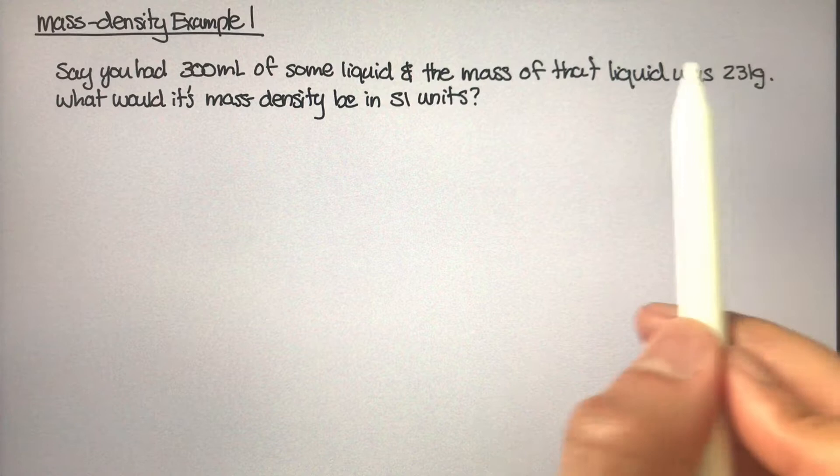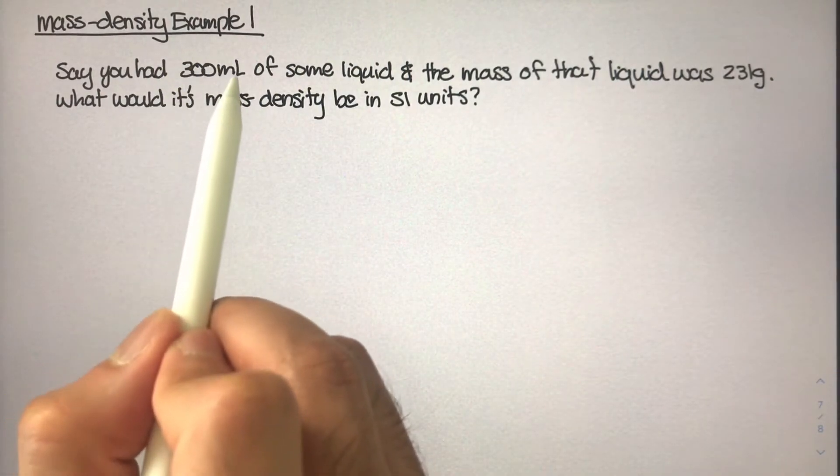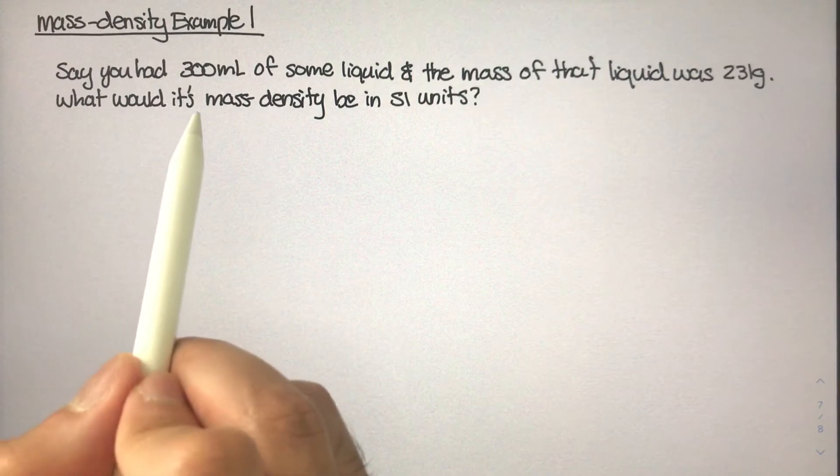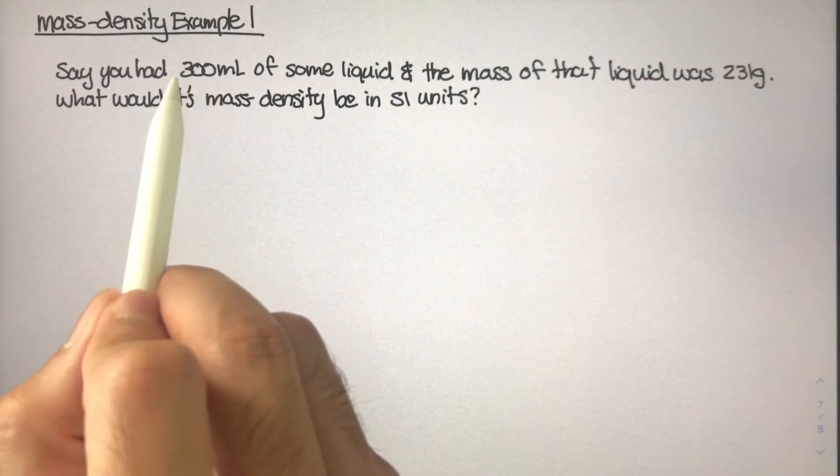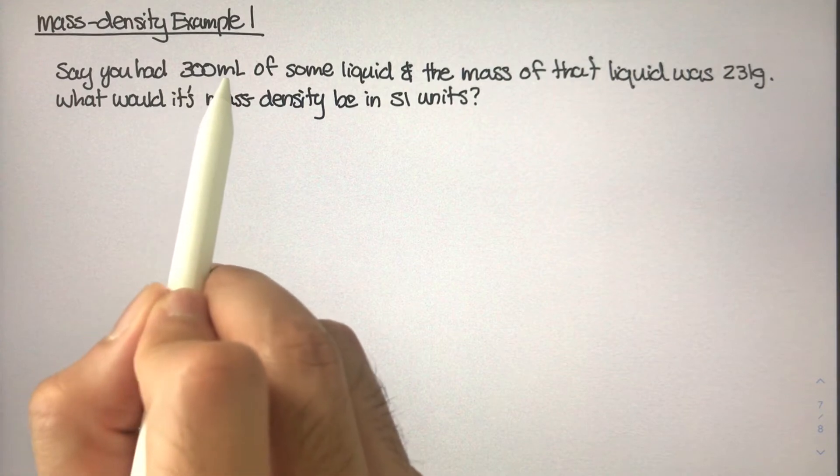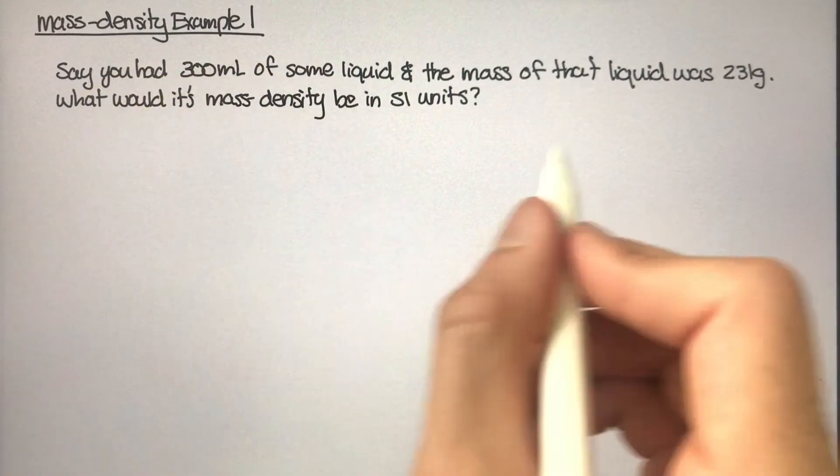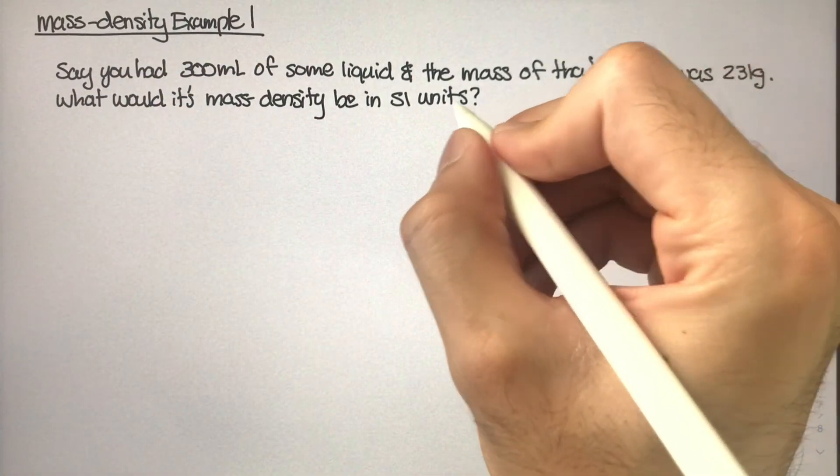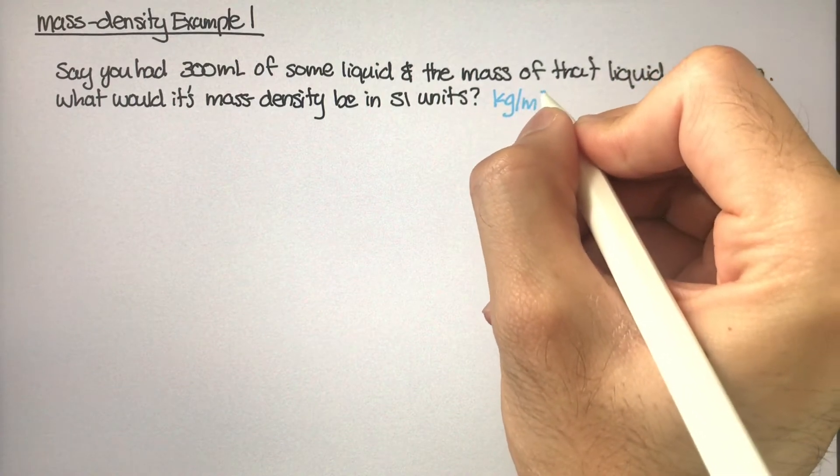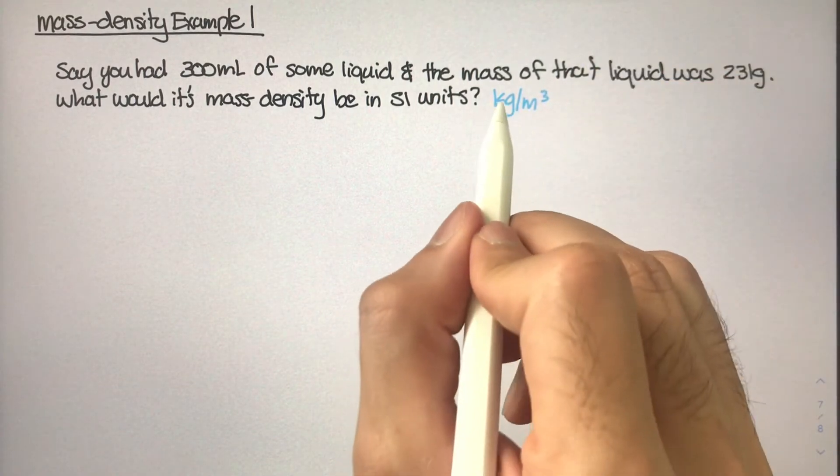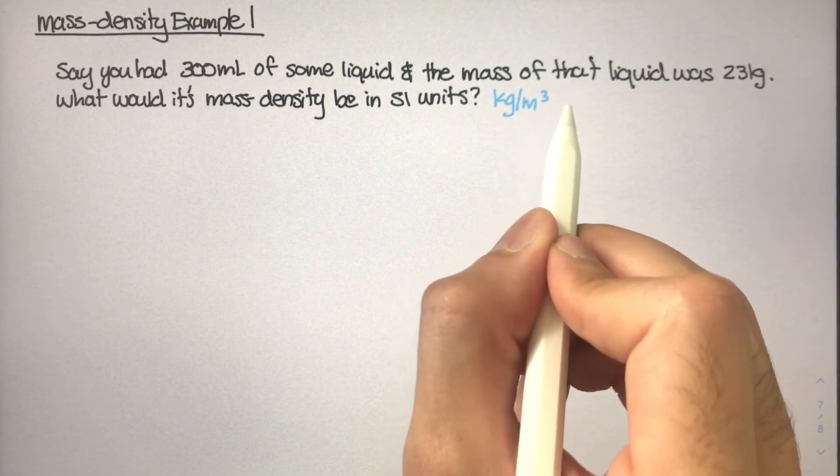So we have 231 grams of some liquid poured into a 300 milliliter container. What would its mass density be in SI units? Currently we have this volume given in milliliters, and we're trying to find the mass density in SI units. In other words, we want this in kilograms per meter cubed. Some mass over a unit volume of meters cubed.